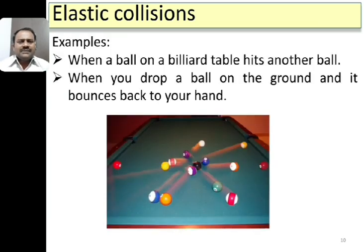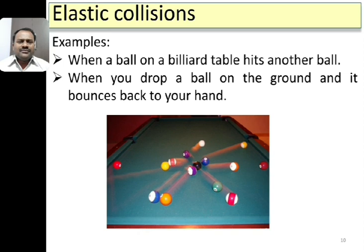For examples: when a ball on a billiard table hits another ball, where the surfaces are very smooth and the balls are highly polished, this collision can be considered elastic. Also, when a highly polished ball is dropped onto a highly polished surface, the energy lost during the collision is very little, and the ball bounces back to your hand. This can also be taken as an example of elastic collision.